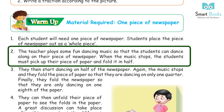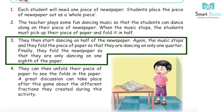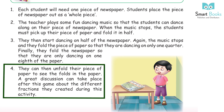When the music stops, the student must pick up their piece of paper and fold it in half. They then start dancing on half of the newspaper again. When the music stops, they fold the paper so they are dancing on only one quarter. Finally, they fold the newspaper so they are dancing on only one eighth of the paper.